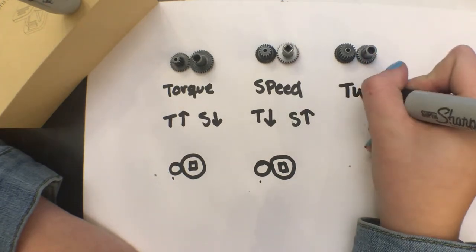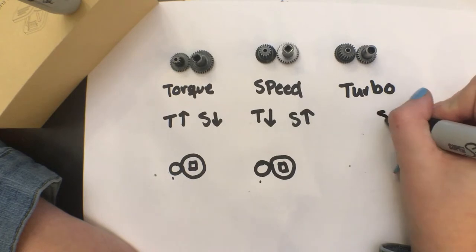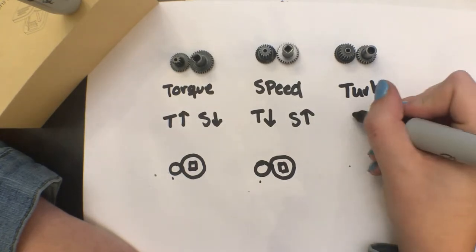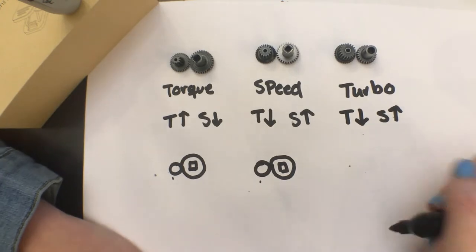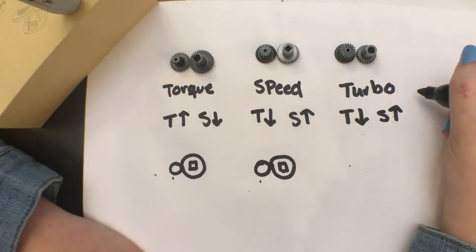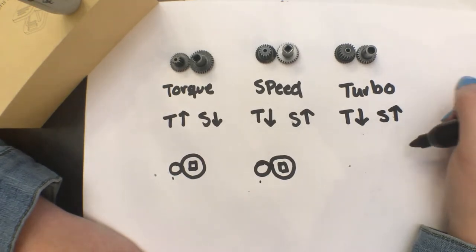The last ones are turbo gears. These are the fastest of the three which means they have the lowest torque. You have to be careful with these because they burn out really easily. If you're going to put them on your drive or something, I would definitely have six motors on your drive to make sure they don't burn out on you because that really sucks.